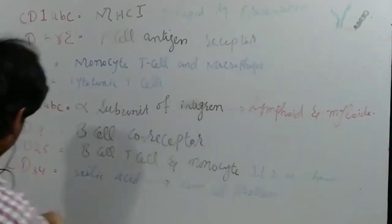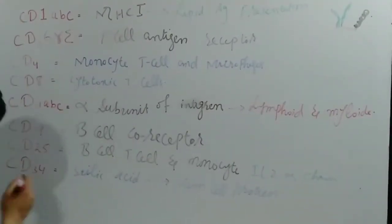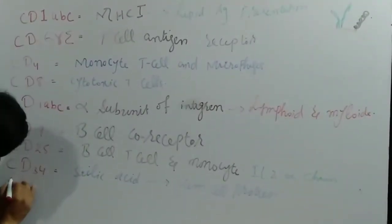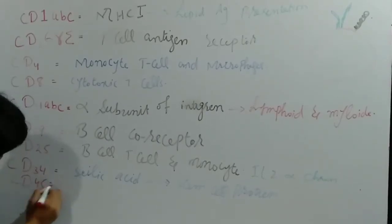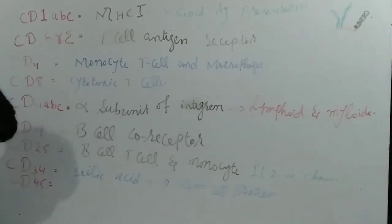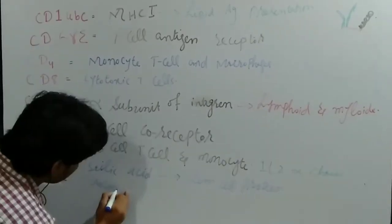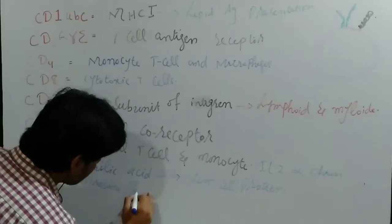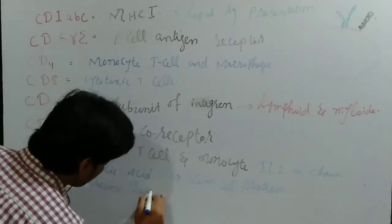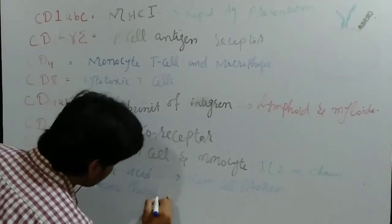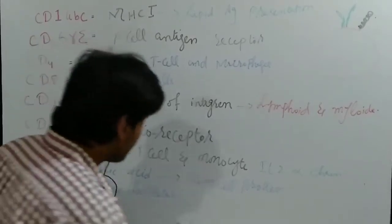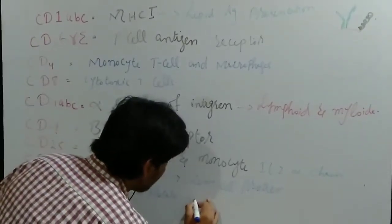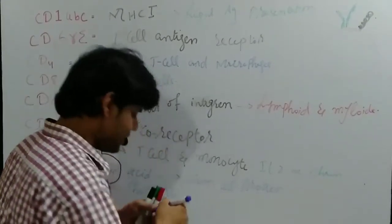We also have CD45. CD45 molecules are actually tyrosine phosphatase, which are usually present on hematopoietic cells.